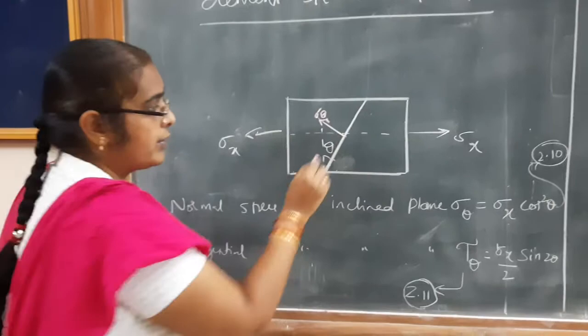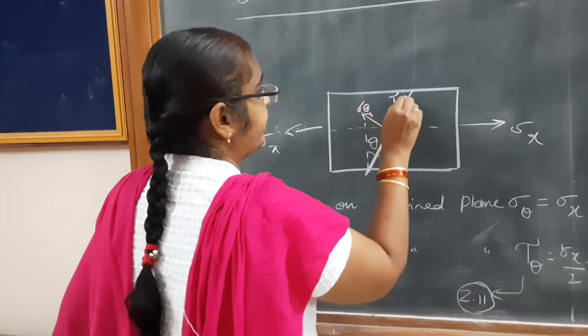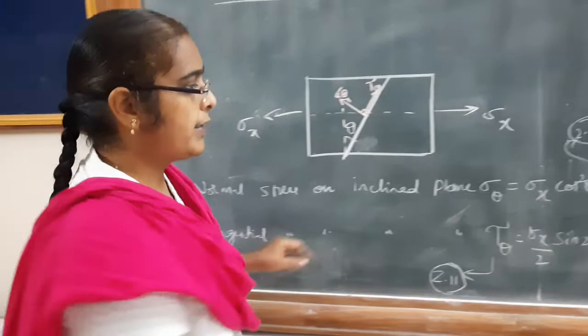If you want to find the tangential stress on this inclined plane, tangential means it will be parallel to the plane — this is tau theta. Here is the equation: normal stress on inclined plane, sigma theta, is equal to sigma x into cos squared theta.